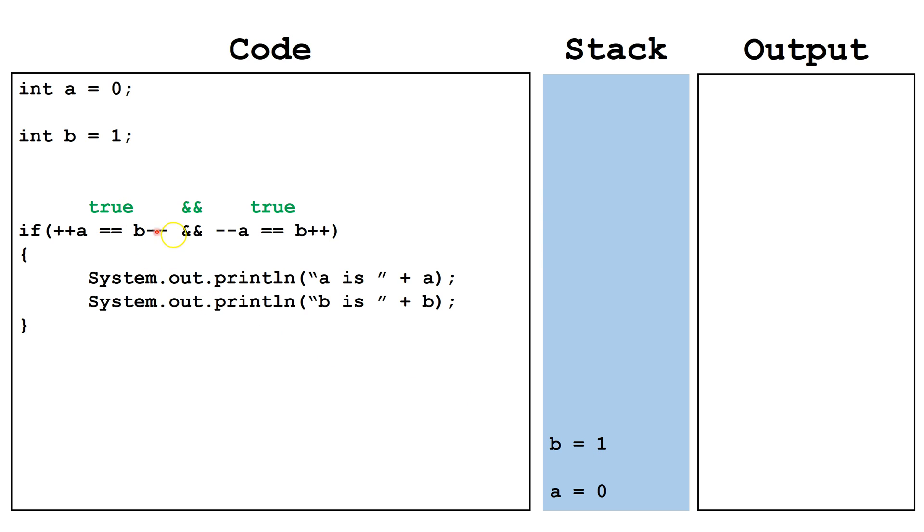Since both are true, true and true evaluates to true in the compound Boolean expression. We will execute the code inside the brackets and output the value of a, which is zero, and b, which is one.